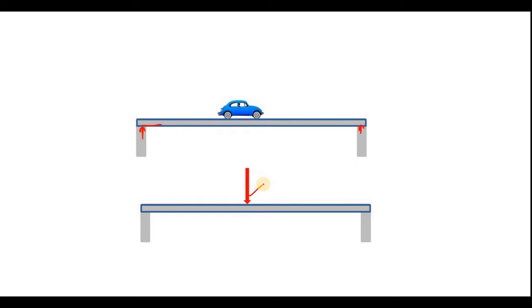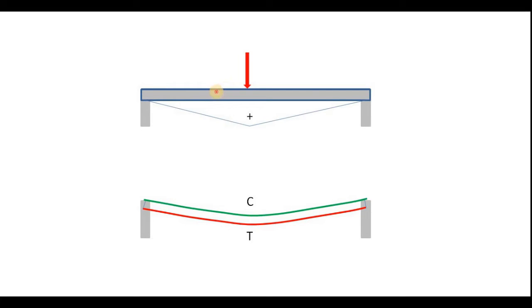Now what happens? If you apply a load, obviously the beam or the girder or whatever you call this or the deck deflects like this. And if you draw the bending moment, it looks like this. This is positive because this is the reaction and this is the reaction.